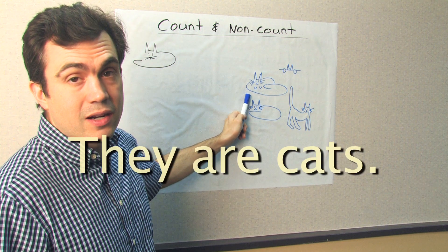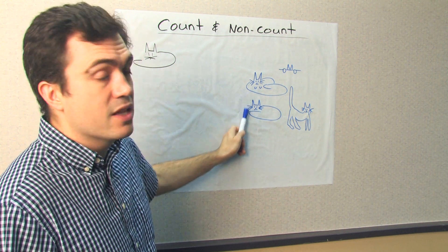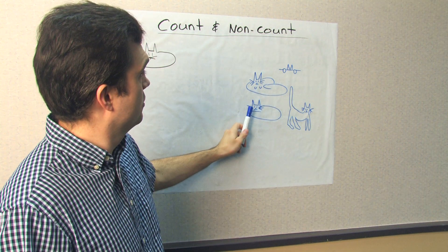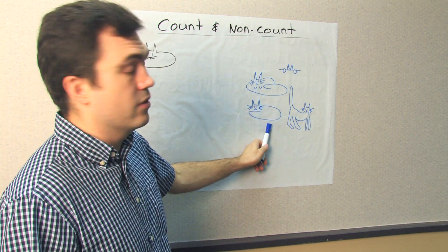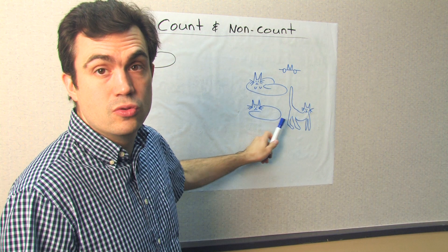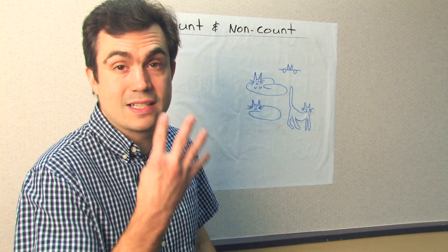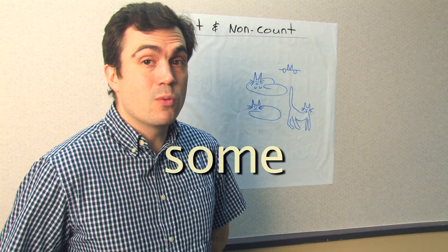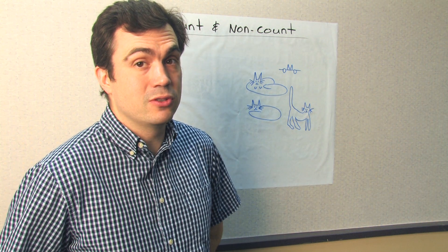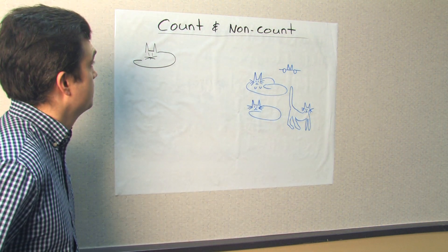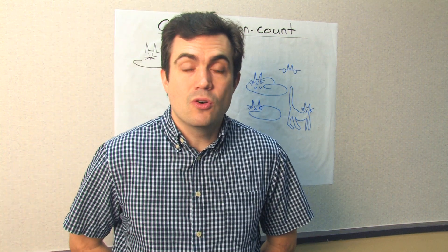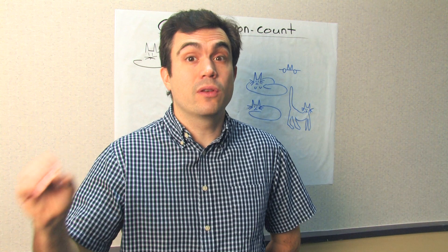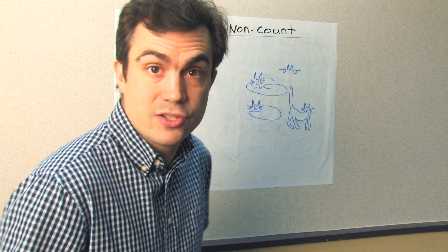They are cats. These are some cats. There are one, two, three, four cats. Countable. Remember, we can use 'some' with countable or non-countable. So cat or cats is an example of a countable noun. We can count them in this situation.